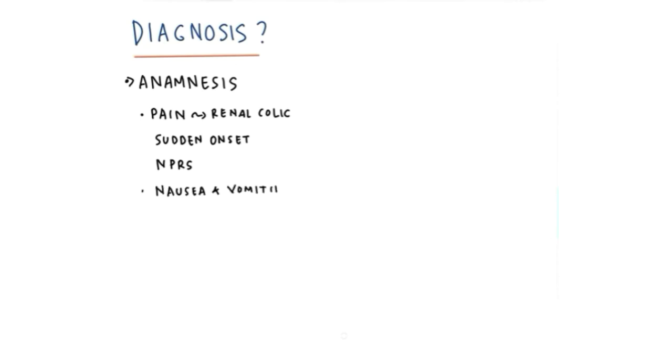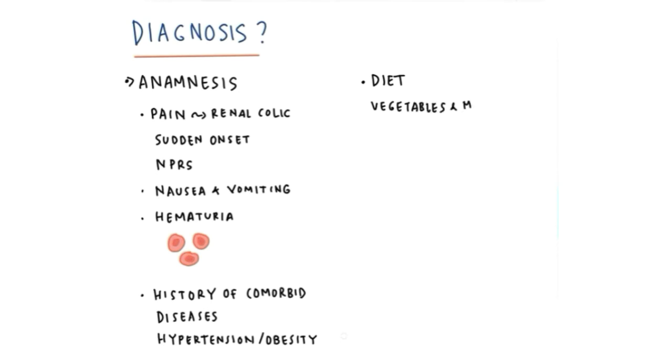How do we diagnose it? First we do anamnesis. Patients with urinary stones generally present with classical episode of typical pain called renal colic. It has a sudden onset. We can ask the patient about the characteristic of the pain, severity of the pain with pain scales like NPRS, and then the pain becomes steady and unbearable, often accompanied by nausea and vomiting. Hematuria, generally microscopic but occasionally frank, frequently accompanies stone passage. Hematuria is defined as the presence of blood or red blood cells in the urine. Don't forget to ask their history of comorbid disease like hypertension, obesity, diabetes, also their diet or food intake history like vegetables, nuts, beans, or minerals like salts.